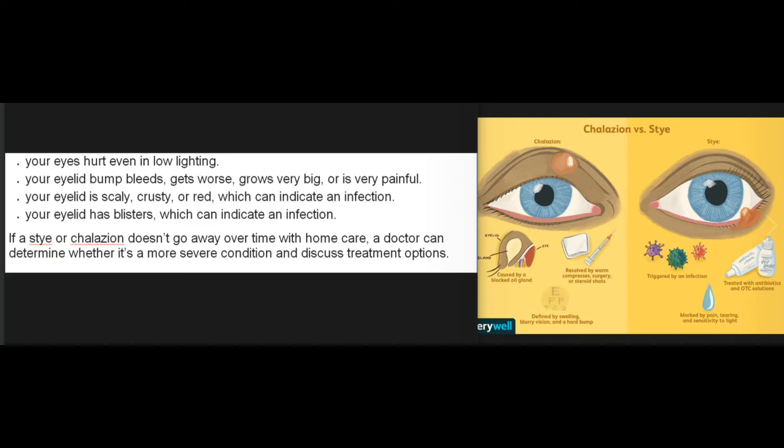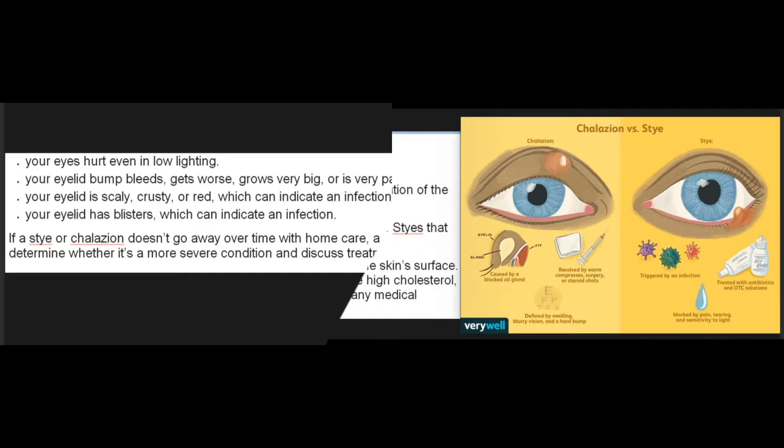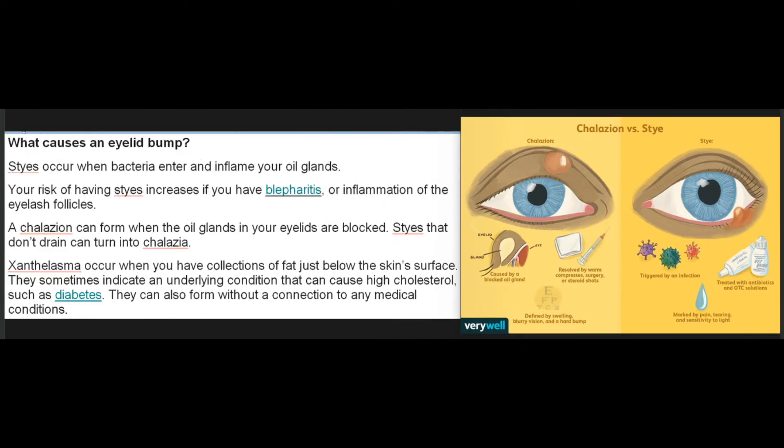Also see a doctor if your eyelid is scaly, crusty, or red — which can indicate an infection — or if your eyelid has blisters. If a stye or chalazion doesn't go away over time with home care, a doctor can determine whether it's a more severe condition and discuss treatment options.